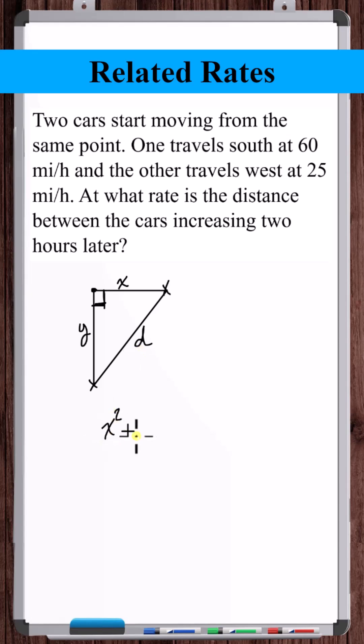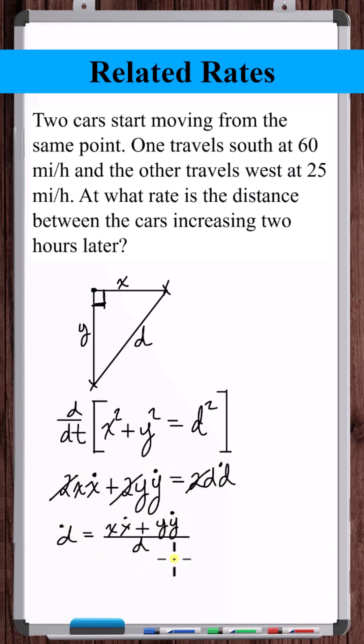We can relate these variables with the Pythagorean theorem. Now let's take the derivative of this equation with respect to time. Solve for d dot. Now we know, or we can find, all of these values.